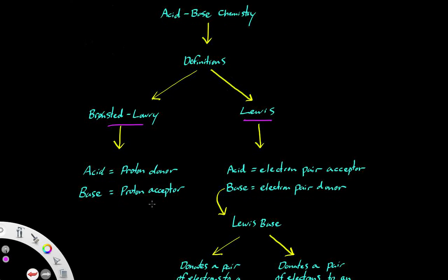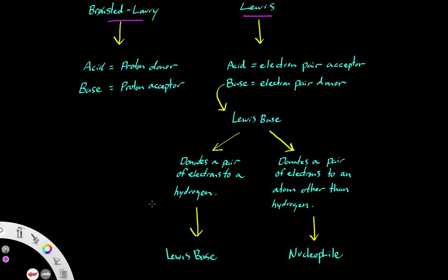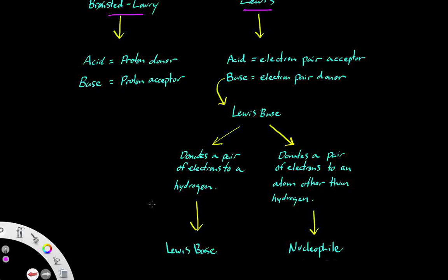The Lewis base has two different components, and they each describe different things. If a molecule donates a pair of electrons to a hydrogen, you can still call it a Lewis base. However, if a molecule donates a pair of electrons to an atom other than hydrogen, you have to refer to it as something different — and that something different is called a nucleophile.